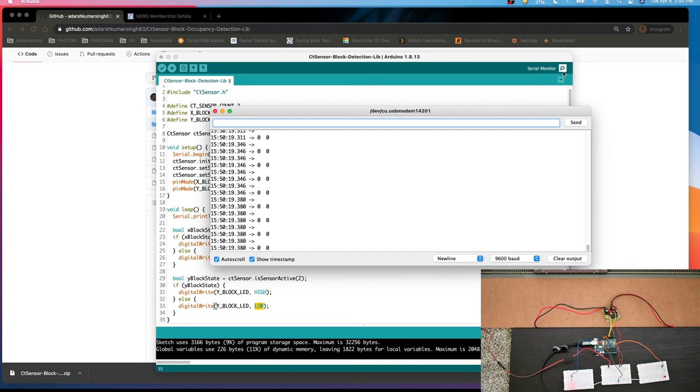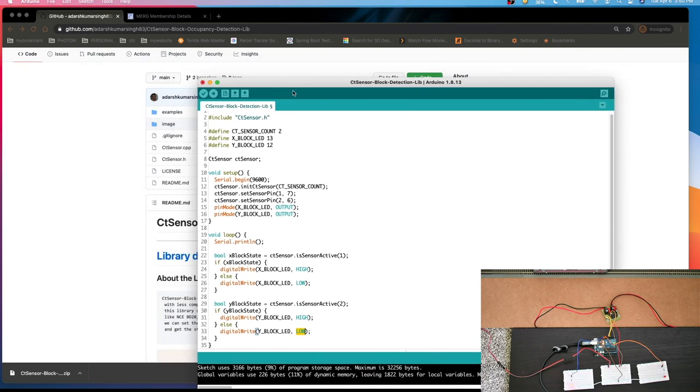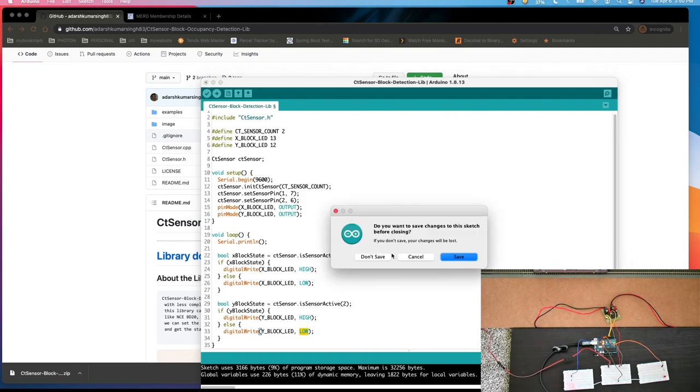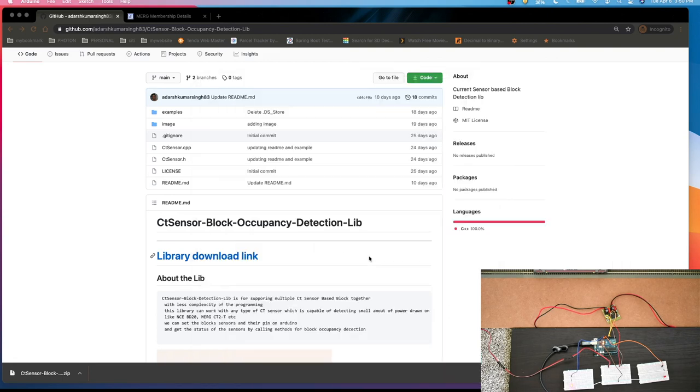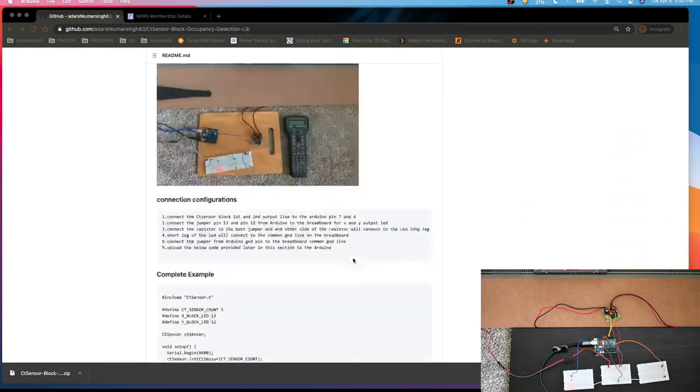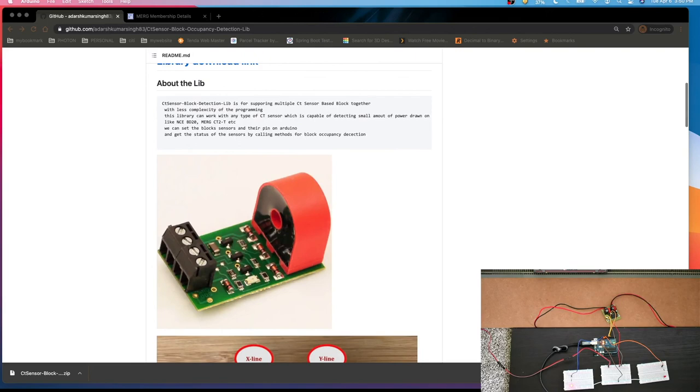That's how we can do the CT sensor-based block occupancy detection using this proprietary circuit from MERG. We can use NCBD20 also, which works with this library I've tested already. Hope this will help you understand the implementation, how we can use the library, as well as how we can do the configuration and connection. All the details are already there on the GitHub page you can follow. That's it for this video, thank you.